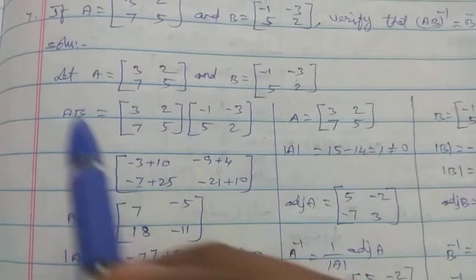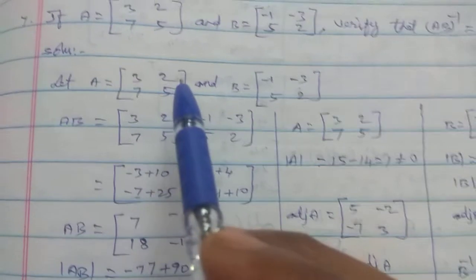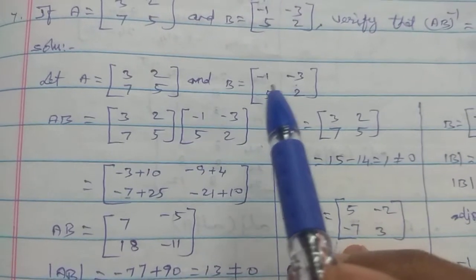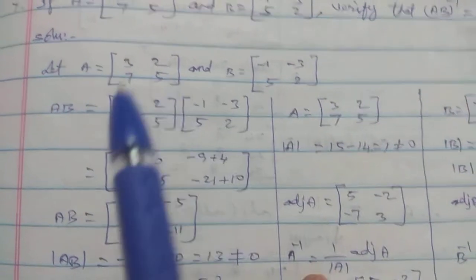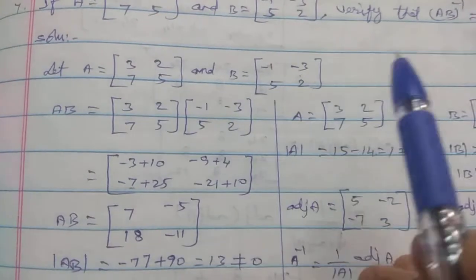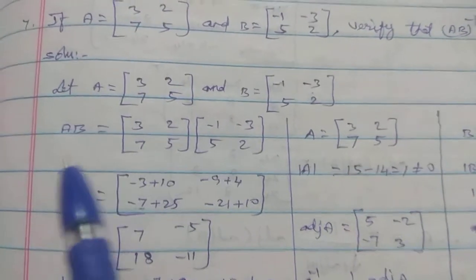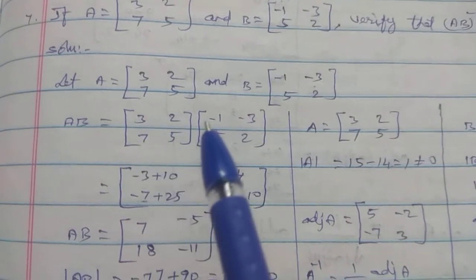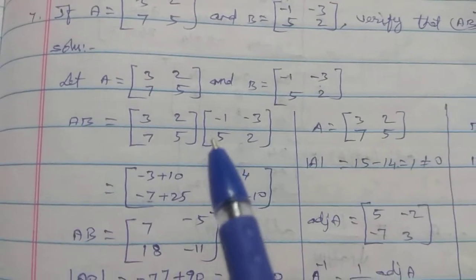Solution. Let A equal to [3, 2; 7, 5] and B equal to [-1, -3; 5, 2]. So AB equals [-1, -3; 5, 2].